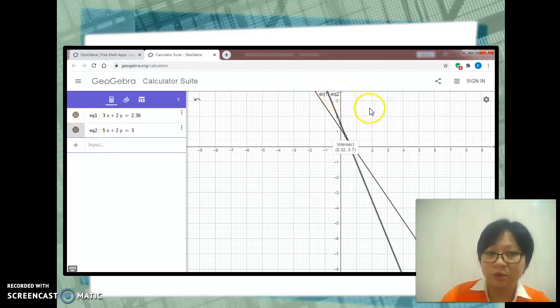So you know which is which. Next, click the point of intersection. GeoGebra will show you the coordinates of the point of intersection. 0.32 is the x-coordinate, and 0.7 is the y-coordinate.